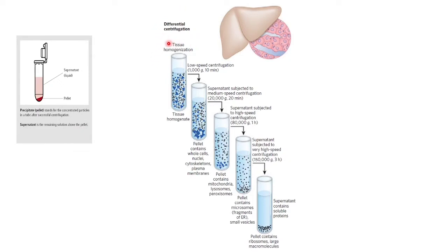Here differential centrifugation is taking place for cell fractionation. Tissue homogenization is a process in which liver tissue is first mechanically homogenized to break cells and disperse their content into aqueous buffer. As you can see in this diagram, this is the tissue homogenized.